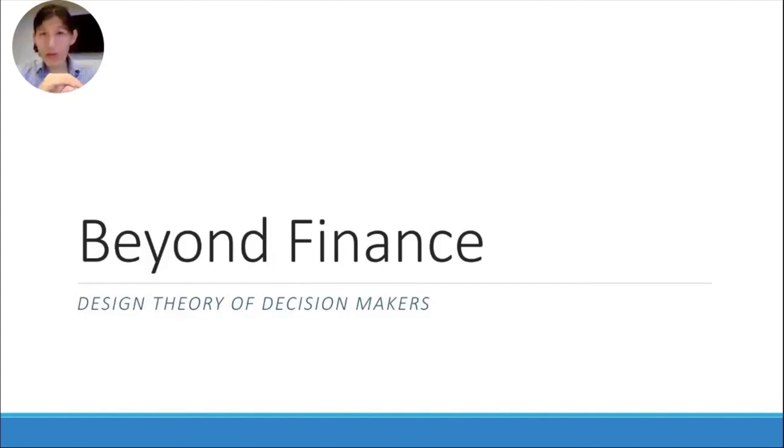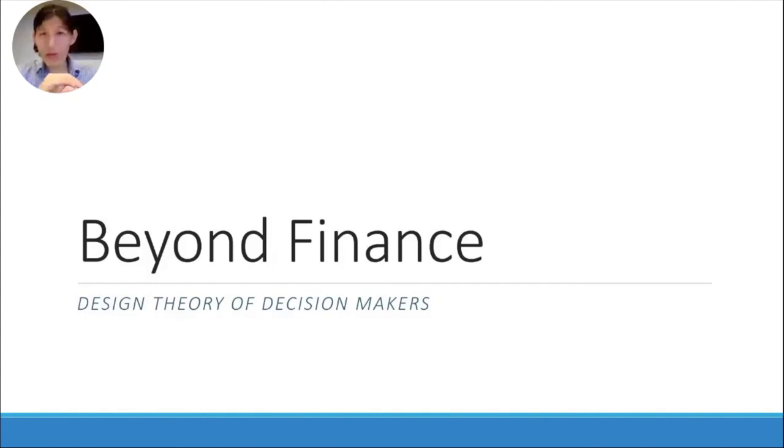Let me walk through how this design theory goes beyond finance. I've discussed portfolio optimization. Nice thing is that it really is a specific type of predictive resource allocation and control problem. There are very similar problems outside finance as well. One example could be managing smart energy grids. Another one could be how do you determine how to spend your tax budgets. And for poker fans out there like myself, even poker, because if you think about how much am I betting, when am I betting, should I fold and whatnot, or what other actions can I take to understand more about your opponent's information? Essentially, poker could be seen as another type of these problems as well.